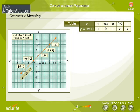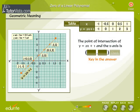From the graph, find the point of intersection of the straight line y = 2x + 1 and the x-axis. Key in your answer.